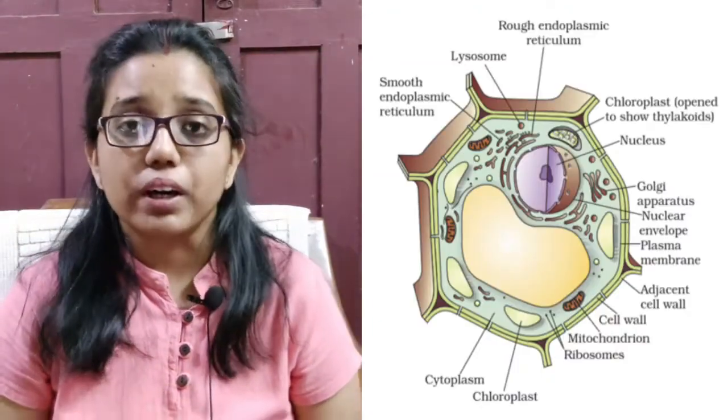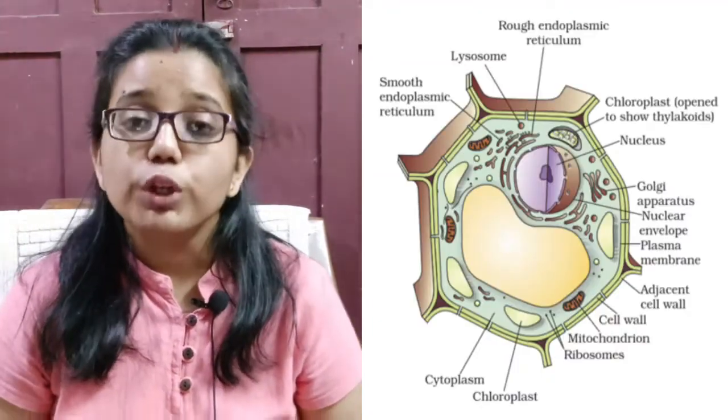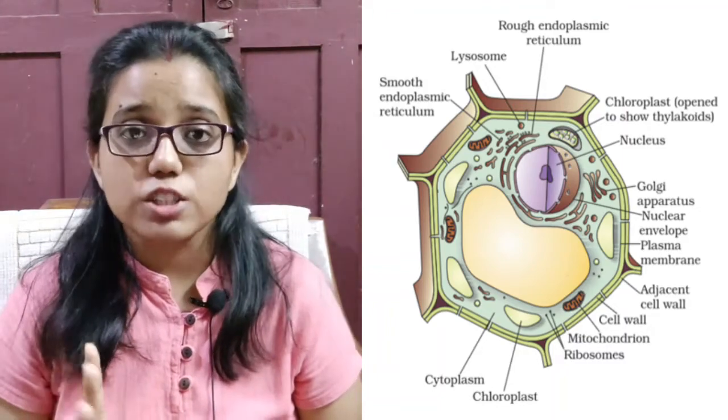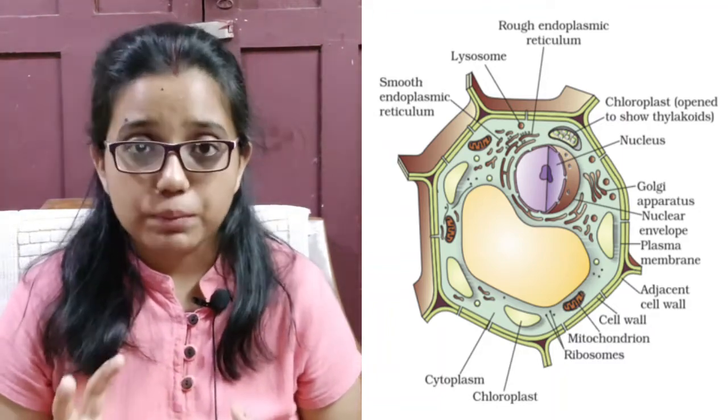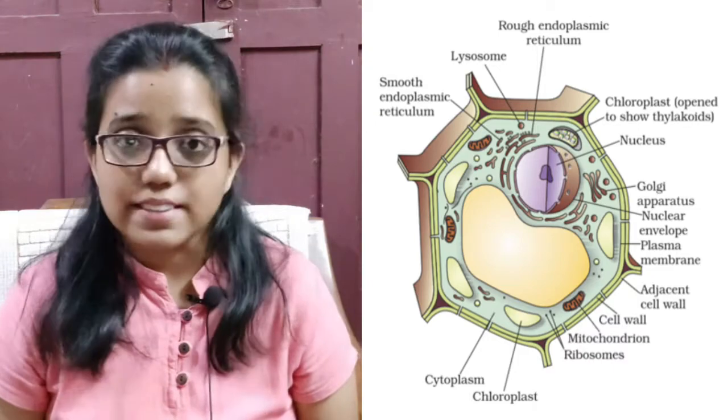Now, if you study a single cell under a microscope, you would come across three features in almost every cell: plasma membrane, nucleus and cytoplasm.